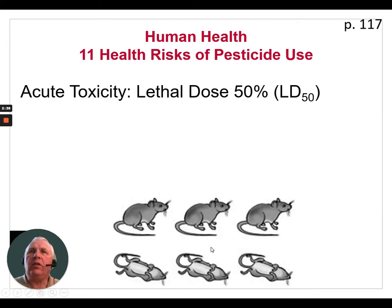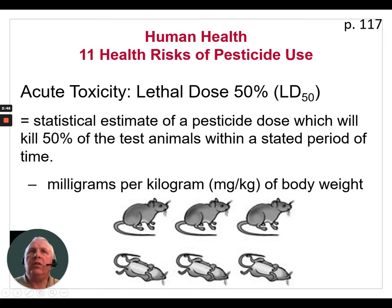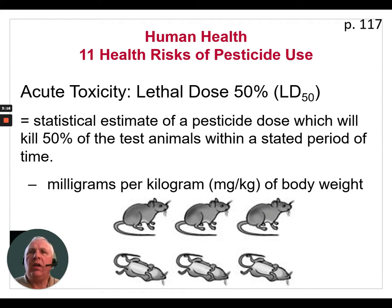Acute toxicity is measured by the lethal dose, or LD50 — a statistical estimate of the pesticide dose which will kill 50% of the test animals within a stated period of time. This is measured in milligrams per kilogram of body weight. So the smaller the animal or person, the more effect the same given amount of pesticide would cause. This is why we always see warnings to keep anything poisonous or toxic away from small children — it takes a very minute amount to cause the same toxic or deadly effect as it would in an adult.